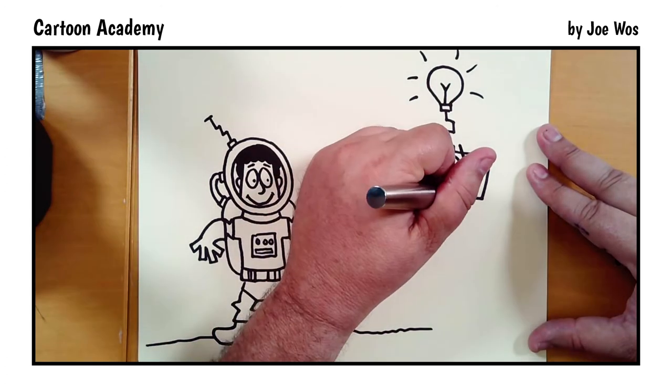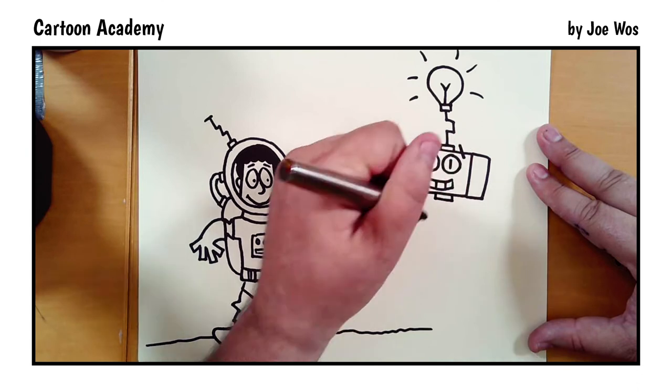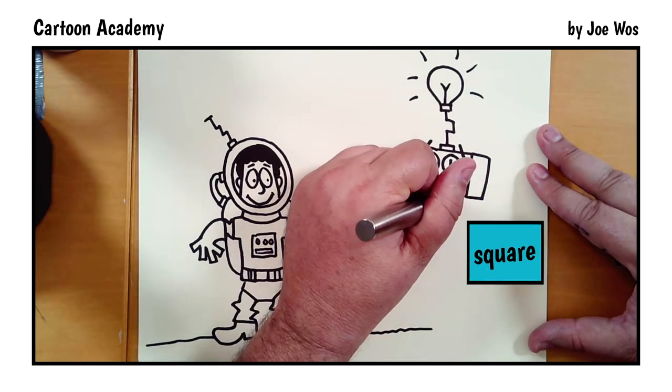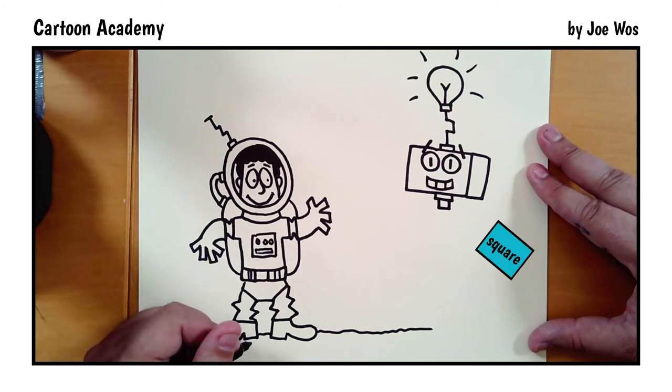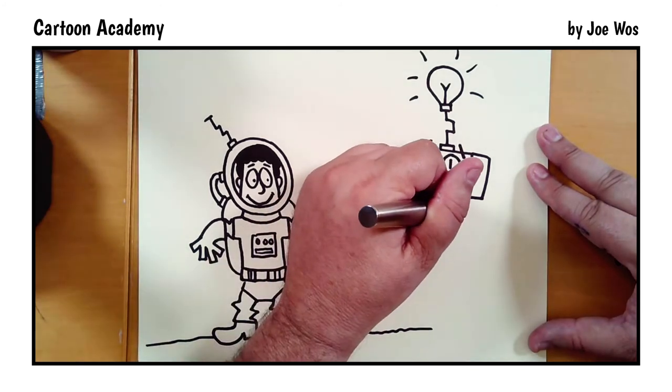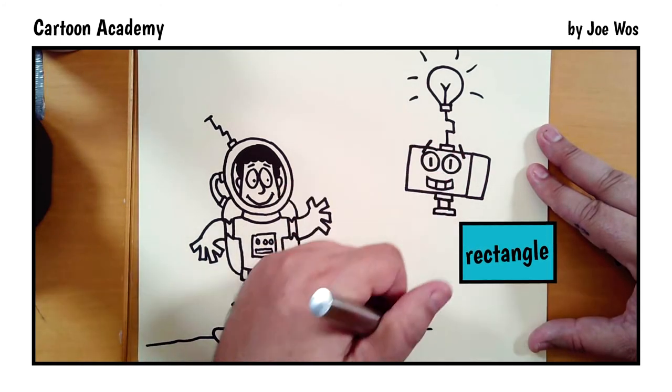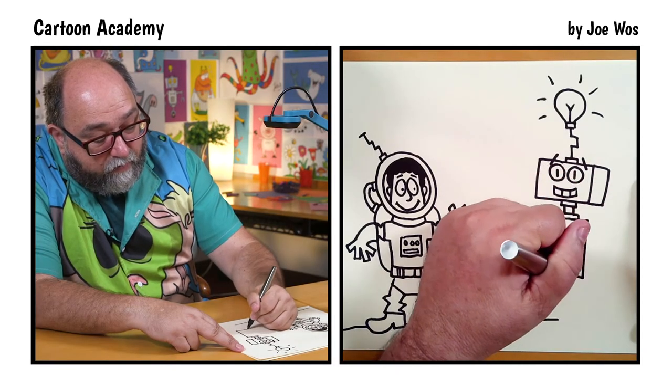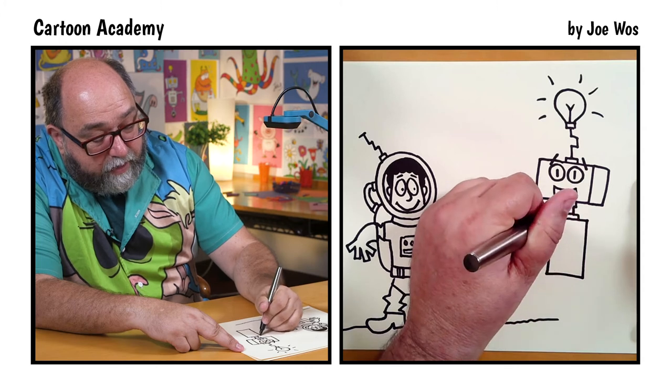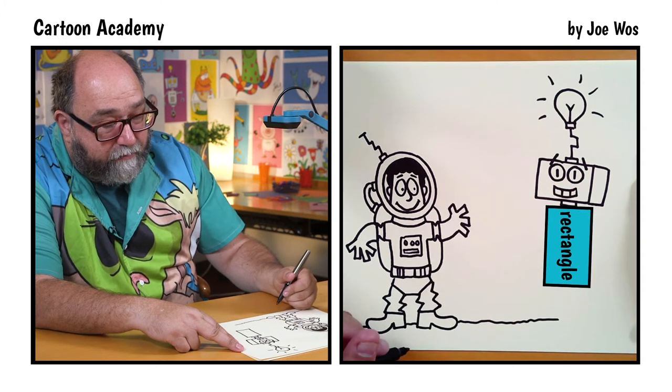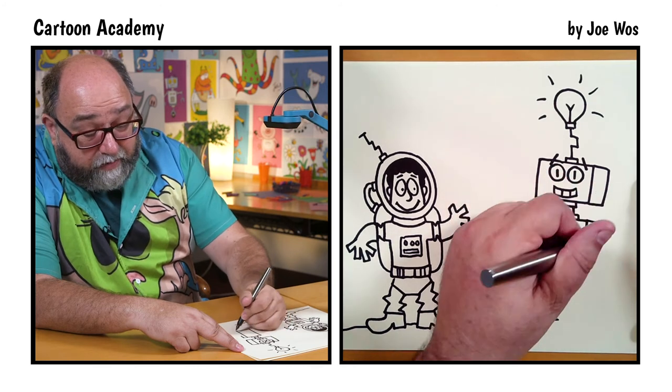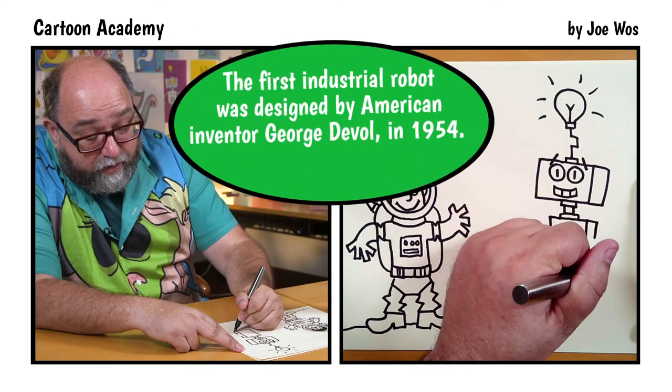Now for the neck. Over. One down, another square. Lots of squares and rectangles when you're drawing a robot. Up and another rectangle. Over, down, over, up, and in with another rectangle. Over and down. Leave a little bit of a gap. Over and in.